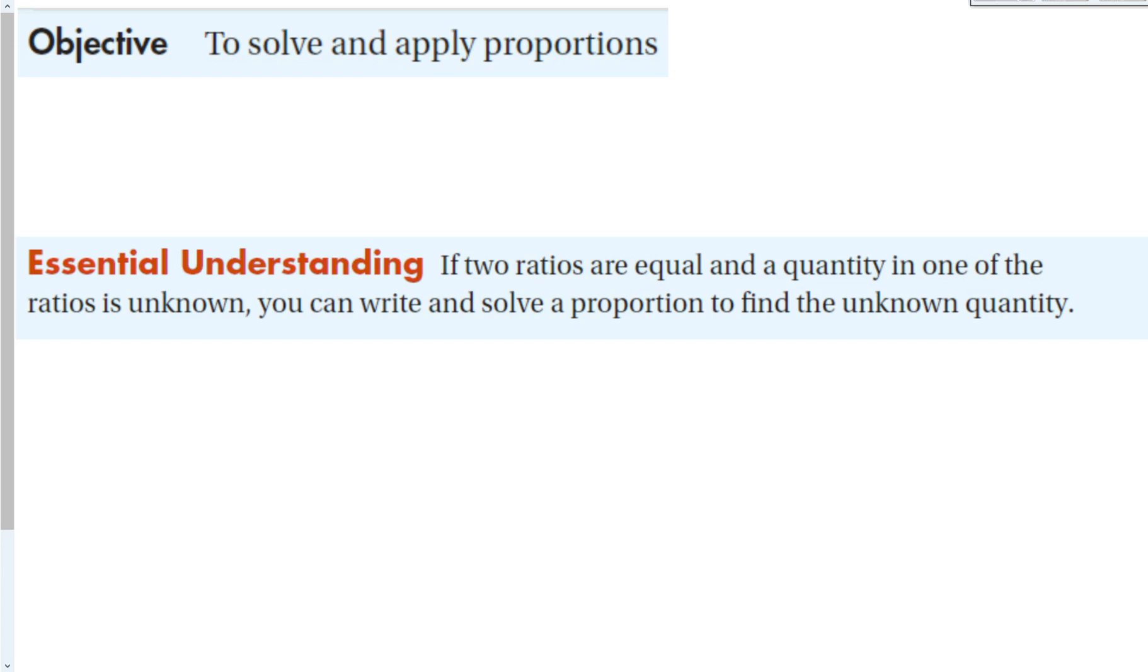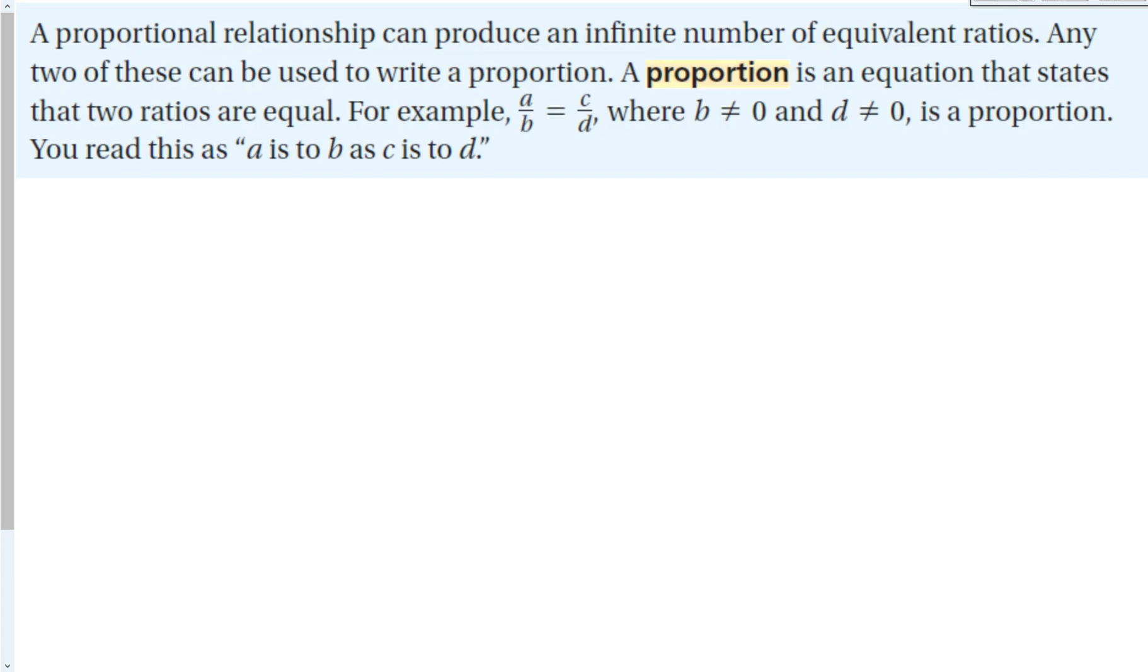Our essential understanding is that if two ratios are equal and a quantity in one of the ratios is unknown, you can write and solve a proportion to find the unknown quantity. A proportional relationship can produce an infinite number of equivalent ratios. Any two of these can be used to write a proportion.